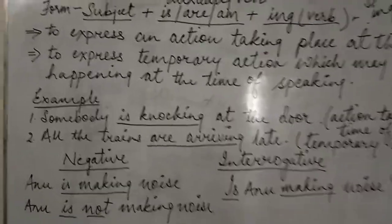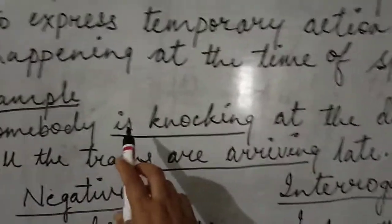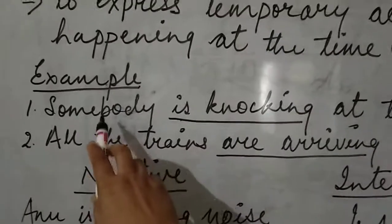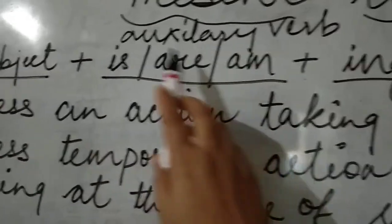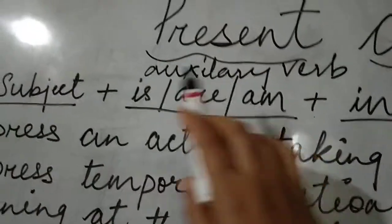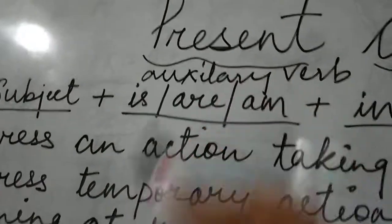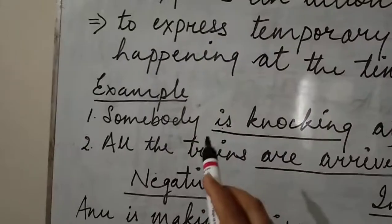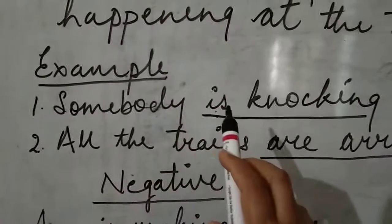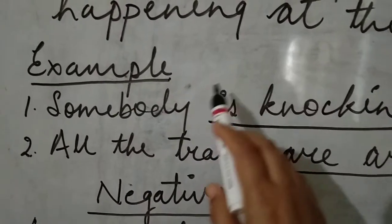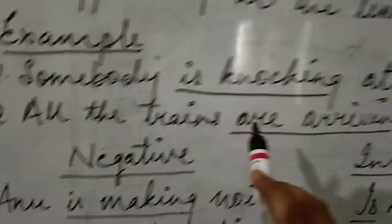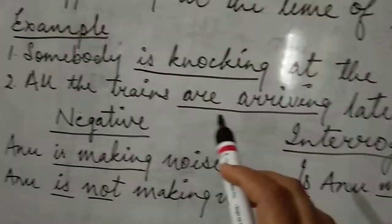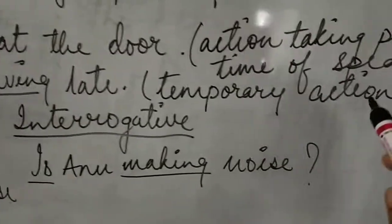It is a temporary action. You have to take care of subject-verb agreement while using is/am/are as the auxiliary verb. The auxiliary verb is used in present form only. 'All the trains are arriving late' — here 'are arriving late' shows subject-verb agreement, and it is a temporary action.